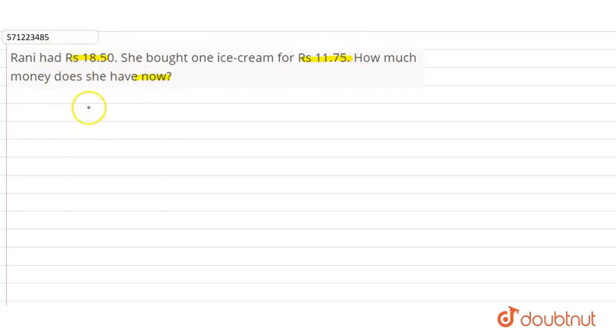In the question, it is given that the total money Rani had is rupees 18.50, and she has spent her money on ice cream which is equal to rupees 11.75. Now we have to find how much money she has now.